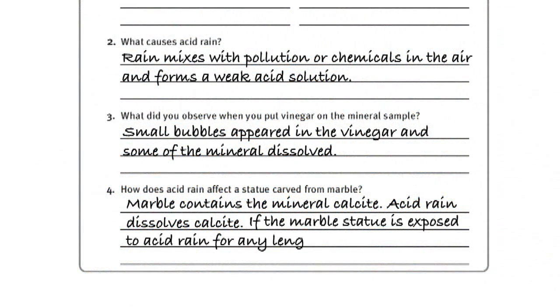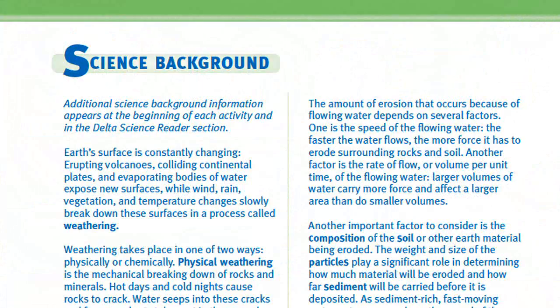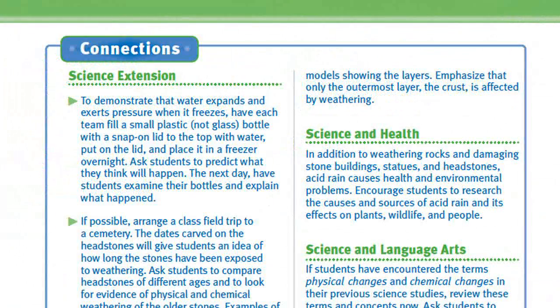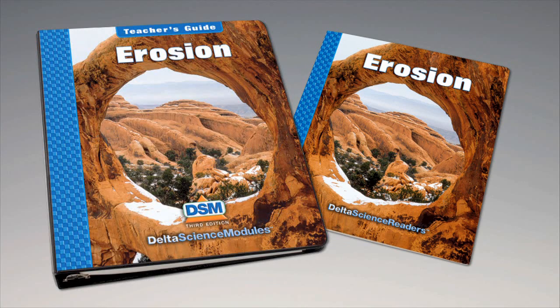Finally, have students complete the activity sheet. To conclude the activity, discard the calcite chips and return the magnifiers and bottles of vinegar to the kit. For science background, reinforcement activities, curriculum connections, and information about the Delta Science Reader, please consult your DSM teacher's guide.